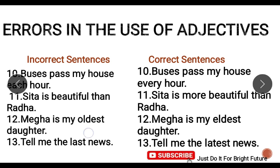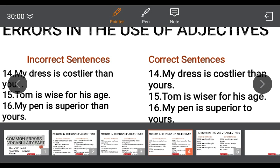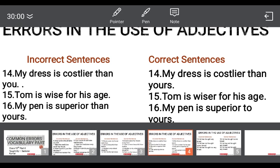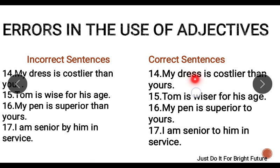The correct sentence for the thirteenth error is 'Tell me the latest news.' Next: 'My dress is costly than you' — incorrect. The correct form is 'My dress is costlier than yours.' Also: 'Tom is wise for his age' should be 'Tom is wiser for his age.'